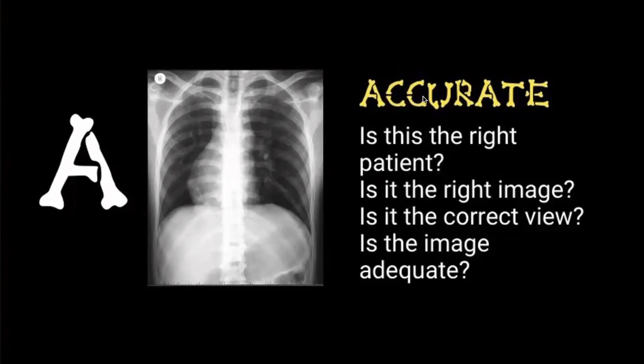For those that are keen in the audience, this is an example of dextrocardia, where the heart is on the wrong side. It's important that you double-check that the image is the right way around, because this is accurate for this particular patient.